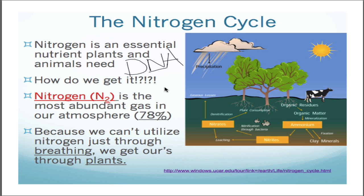Now the question becomes: how do we get that nitrogen? Nitrogen, if you don't know, is usually found as N2 — two nitrogen atoms bonded together. It is the most abundant gas in our atmosphere — 78% of our atmosphere is nitrogen. You might think it's super easy to get that nitrogen, but we can't use the nitrogen in the atmosphere just by breathing it in. Even though we breathe it in every time we breathe, we're only using the oxygen and breathe the nitrogen right back out.